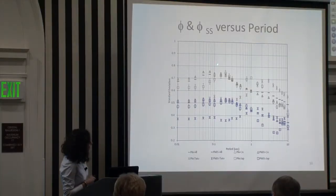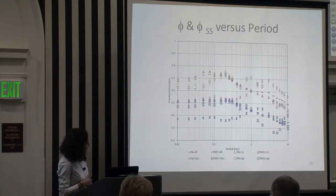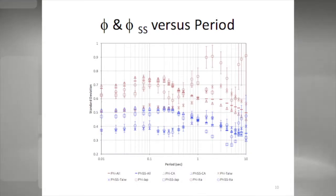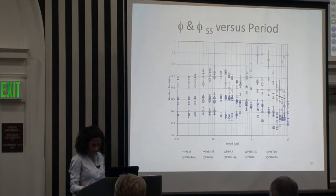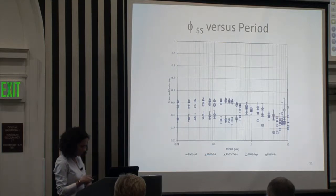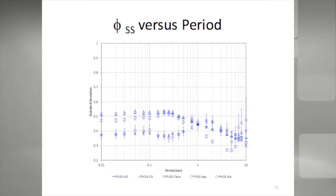Looking at the plot region by region: triangles are California data — phi and phi SS. Squares are Japan — their phi and phi SS. Stars are Taiwan — phi for Taiwan is significantly lower than the rest of the data, and same for phi SS. Circles are Italy, which has limited data and therefore large error. Looking at phi SS only: the full dataset, then California, Japan, Italy, and Taiwan are shown separately.